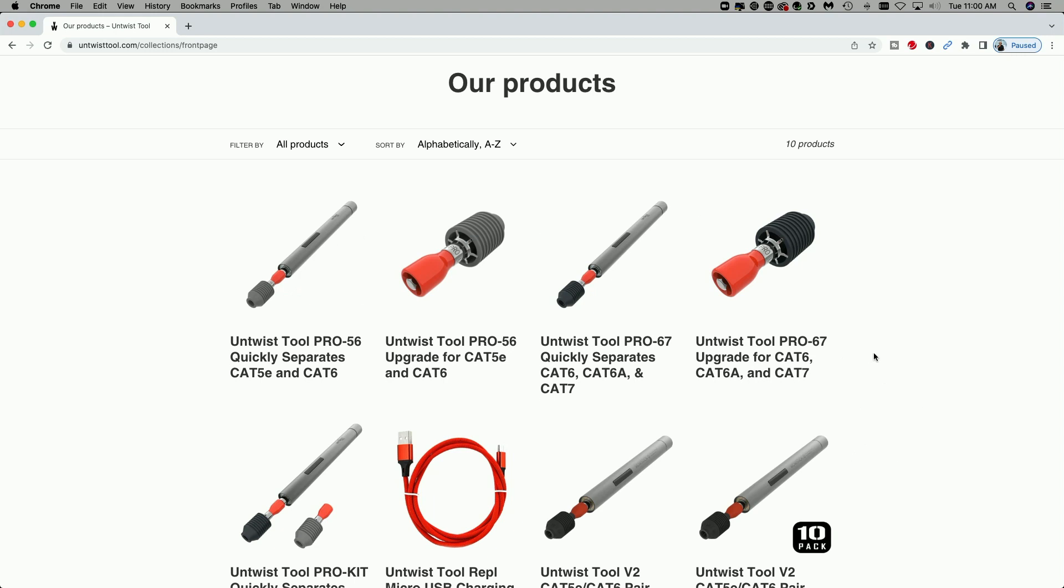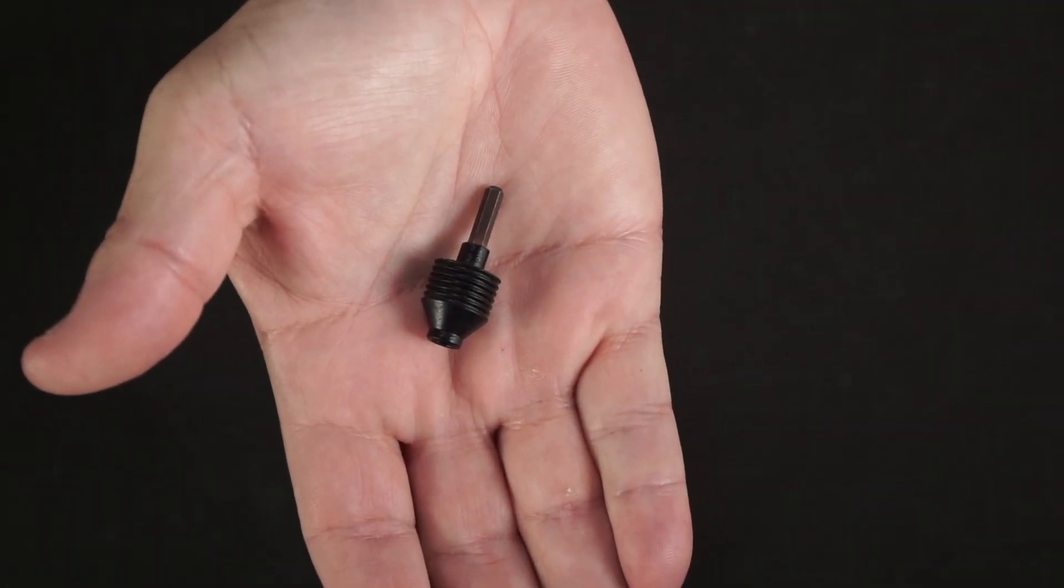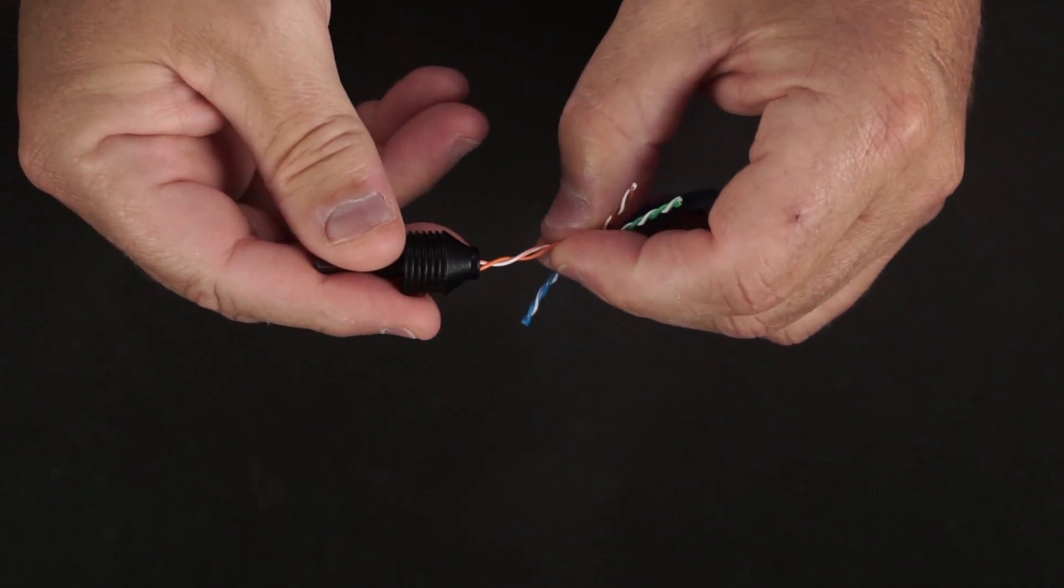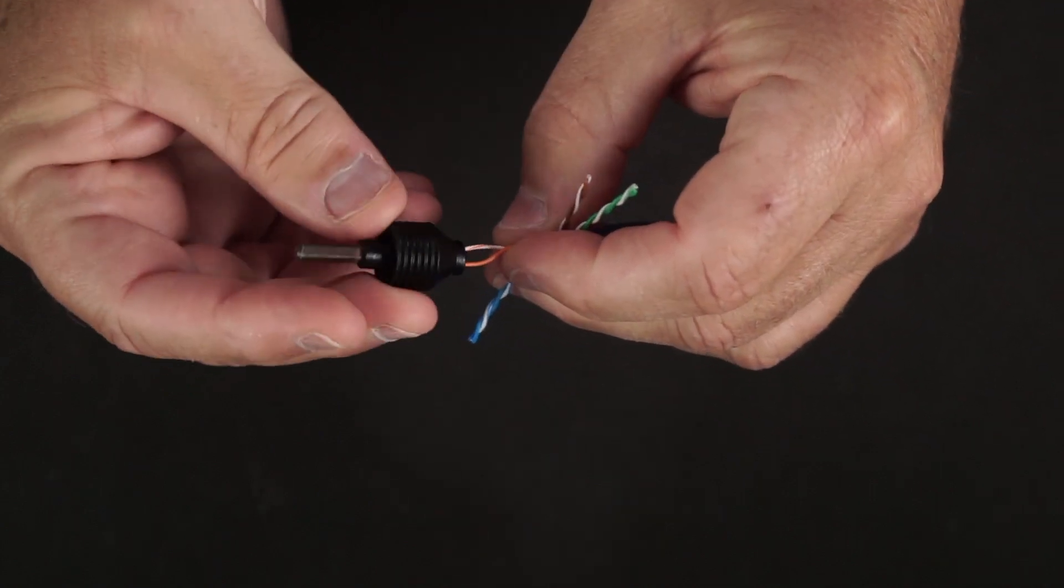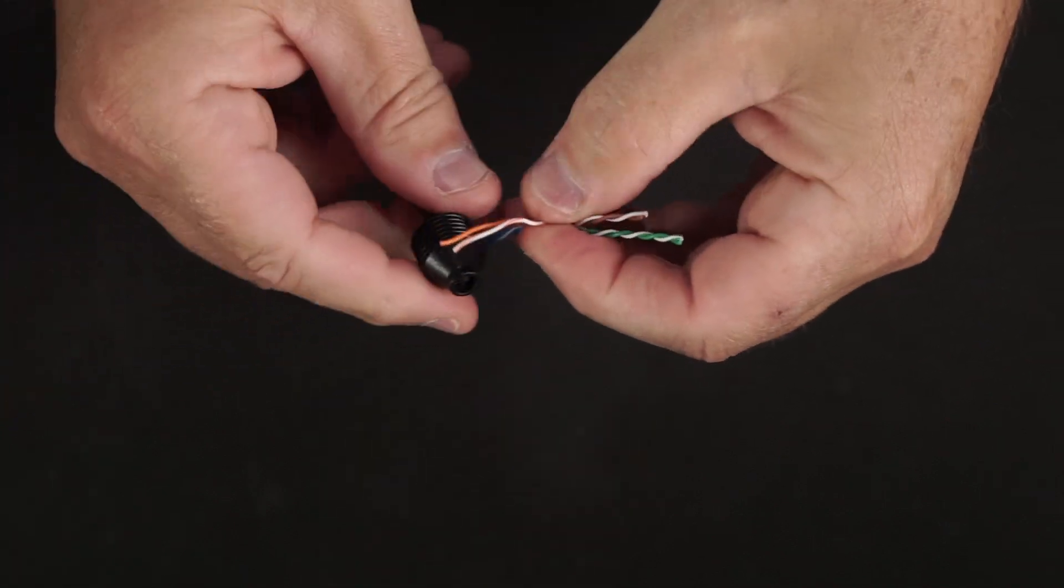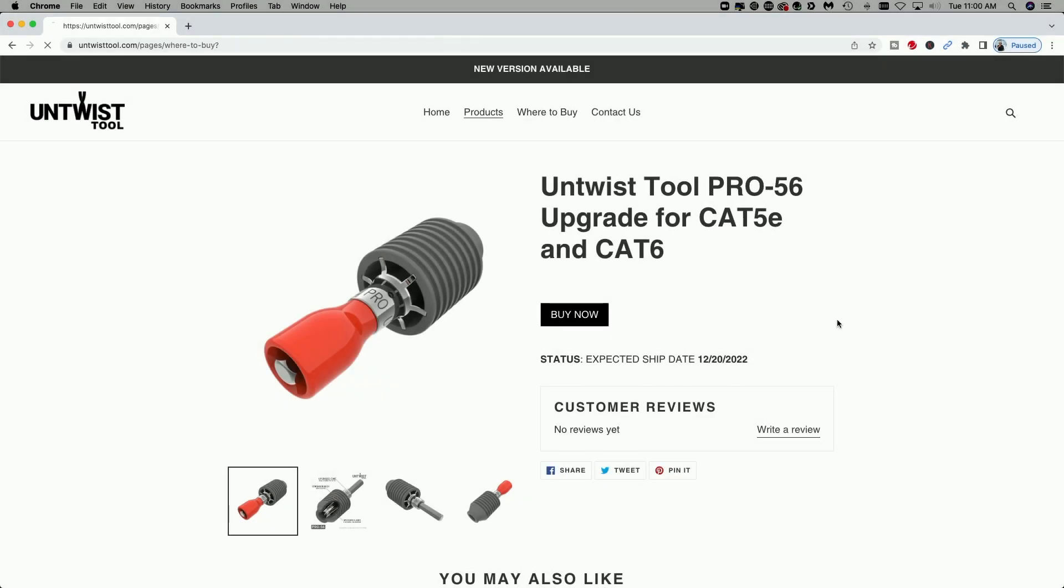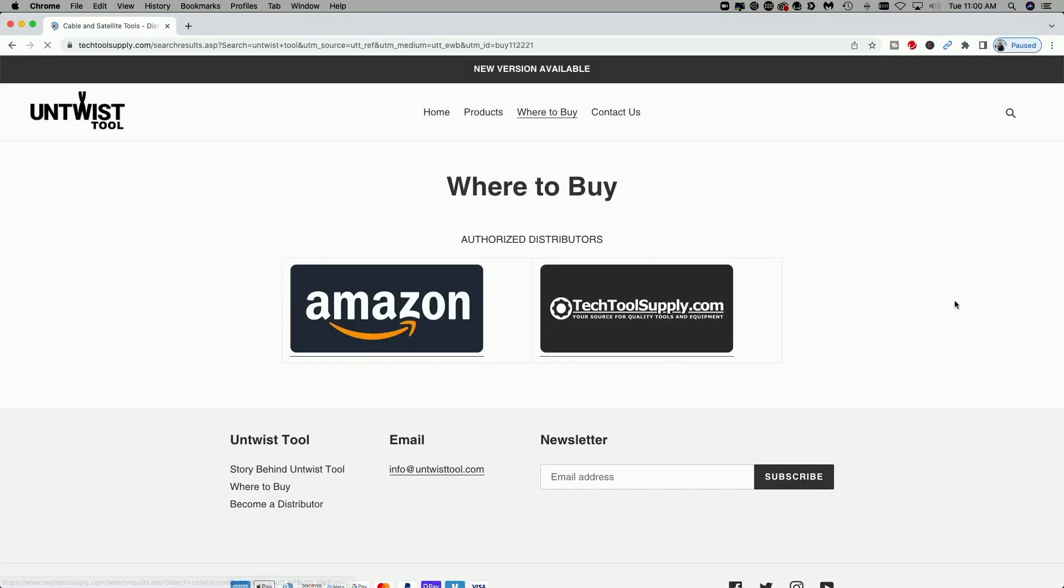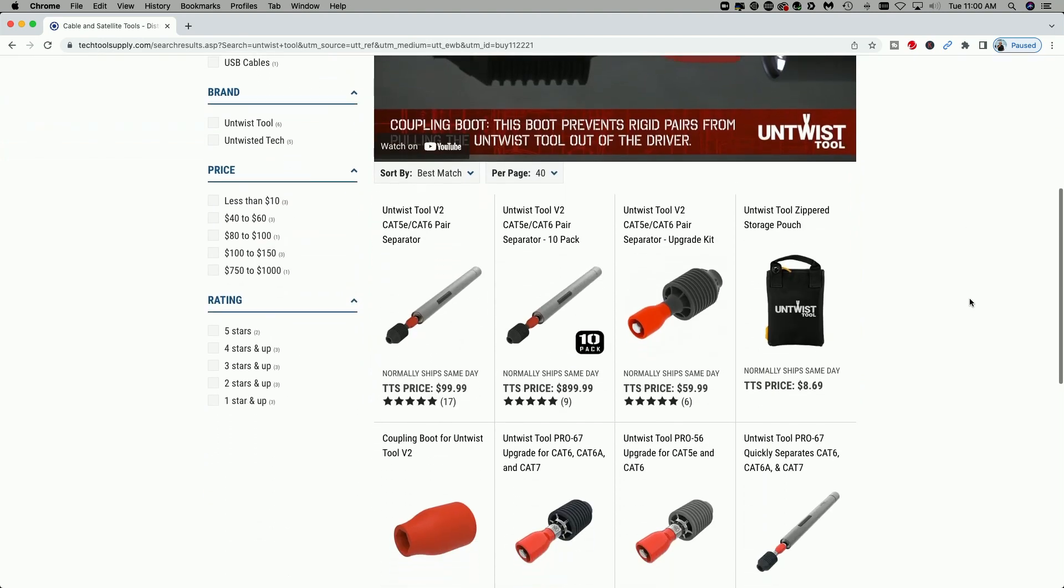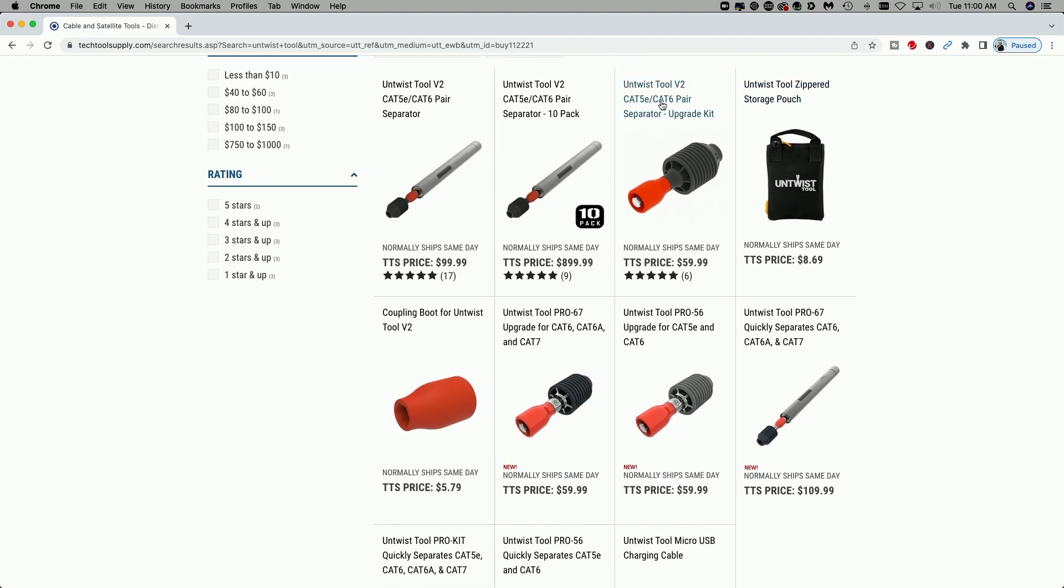What is the untwist tool? It's a quick way to save your fingers if you're doing a lot of cables in the course of a day, and it's the fastest way to untwist twisted pair cables. Let's take a look at the 5e and Cat 6 version. Let's click on buy now to get an idea of what it's going for. You can see here that the upgraded version of the Cat 5e Cat 6 pair separator, just the tool itself, is $59.99.